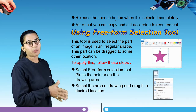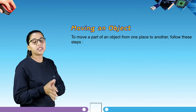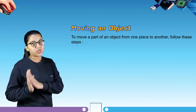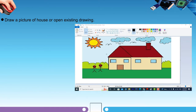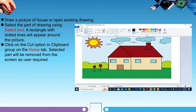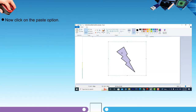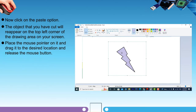Our next topic is moving an object. To move a part of an object from one place to another, follow these steps: draw a picture of a house or open an existing drawing, select the part of the drawing using the select tool — a rectangle with dotted lines will appear around the picture. Click on the cut option in the clipboard group on the home tab; the selected part will be removed from the screen. Now click on the paste option; the cut item will reappear on the top left corner of the drawing area. Place the mouse pointer on it and drag it to the desired location, then release the mouse button.